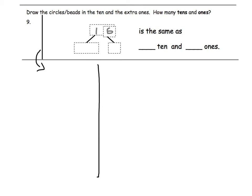So if you look at sixteen, we have one ten and six ones. One, two, three, four, five, six, seven, eight, nine, ten, and we will draw the extra ones next to it.